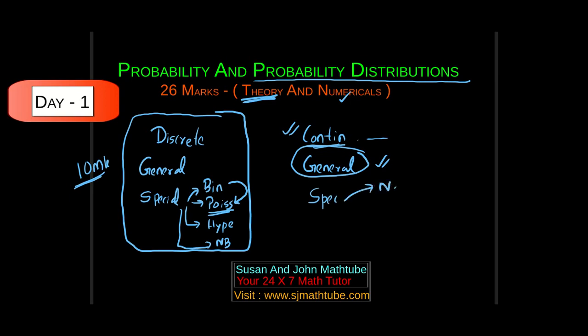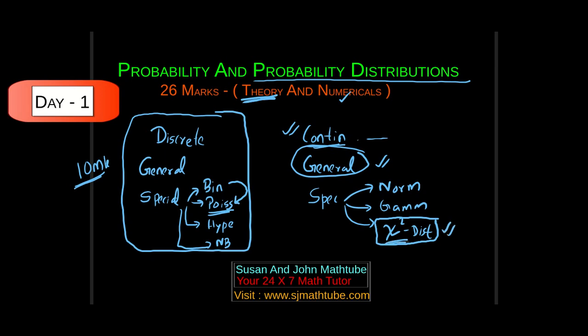The special continuous distributions are: normal distribution, gamma distribution, and chi-square distribution. For chi-square distribution, all you need to learn is the theory. I haven't seen any numerical problems based on chi-square in distributions — and I am not talking about testing of hypothesis; in testing of hypothesis, chi-square test is a regular test.